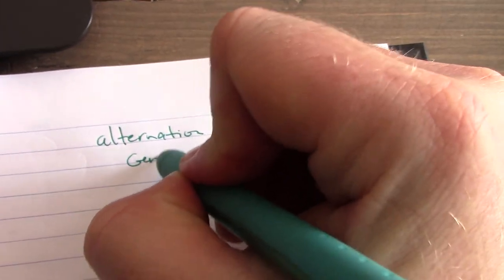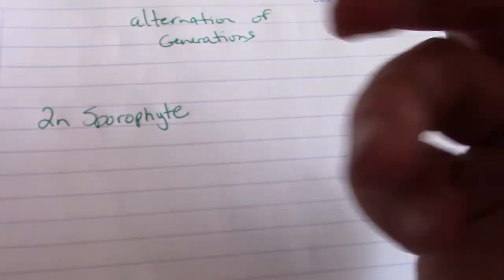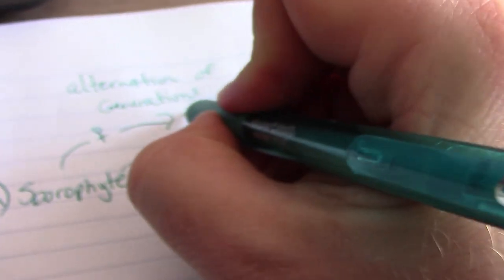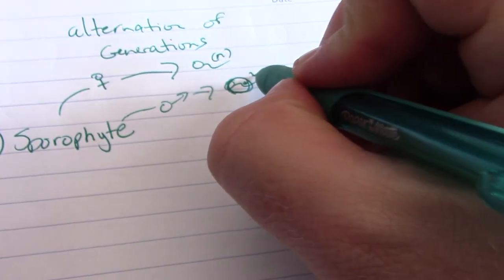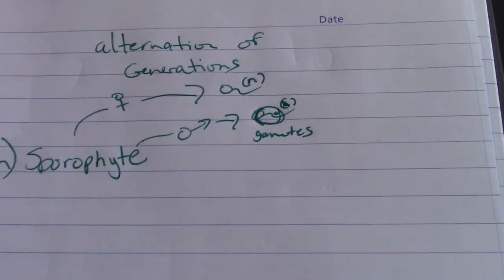But alternation of generations generally looks like this. I'm going to show you an example in your key. You're going to have a diploid sporophyte. You'll have male and female sporophyte. So they're going to produce haploid gametes. But rather than fertilization occurring, so this is produced by meiosis.